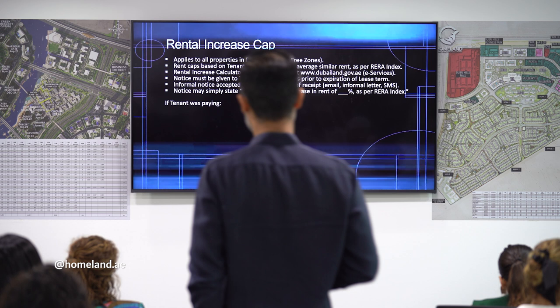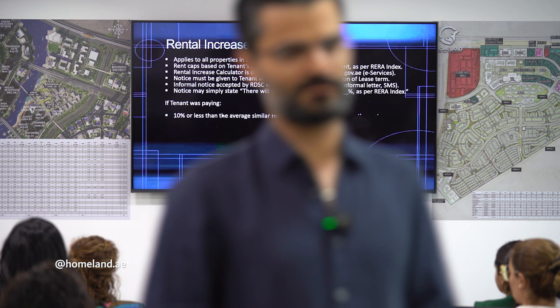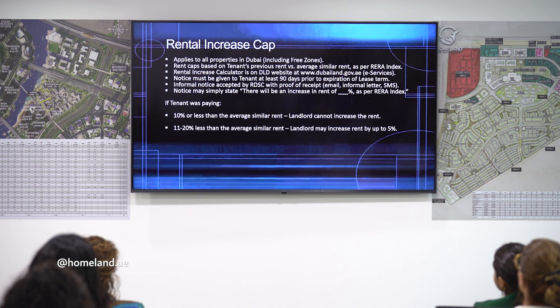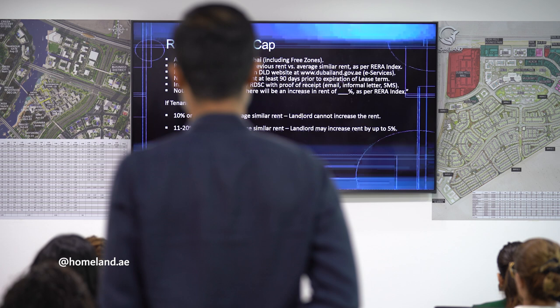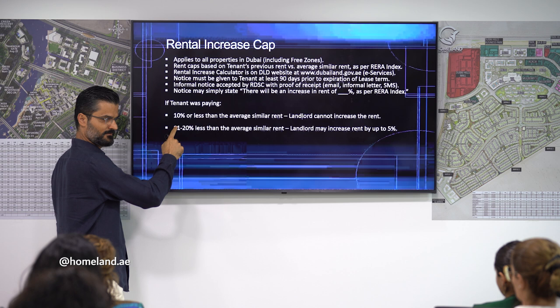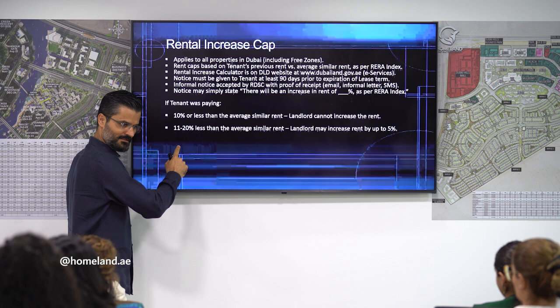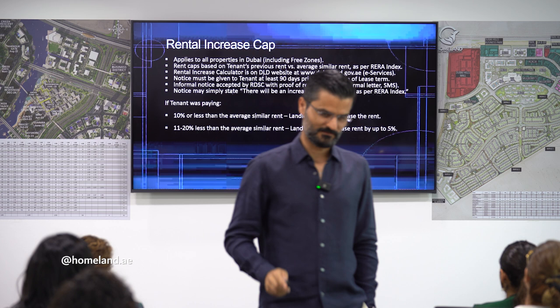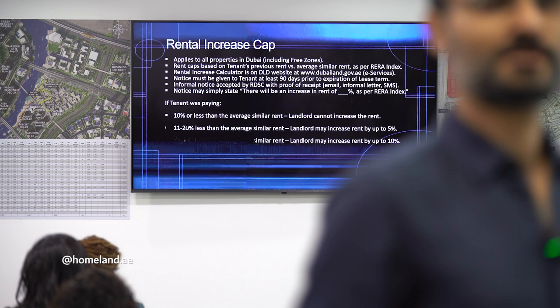The rental increase cap rules: if the rent is 11–20% below the RERA index, the landlord can increase by 5%; 21–30% below, increase by 10%; 30–40% below, increase by 15%; 40% or more below, increase by 20%. The maximum increase is 20%, so even if the rent is half the market price, the landlord cannot increase by more than 20%.